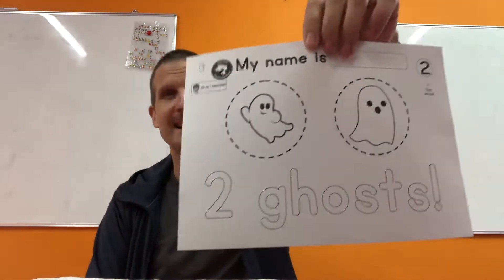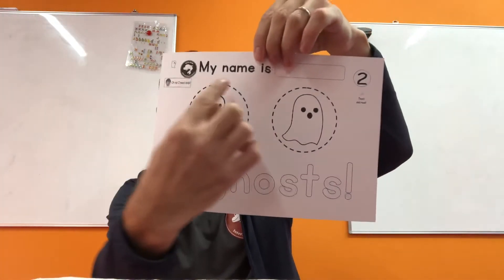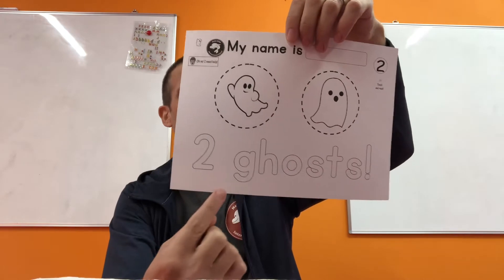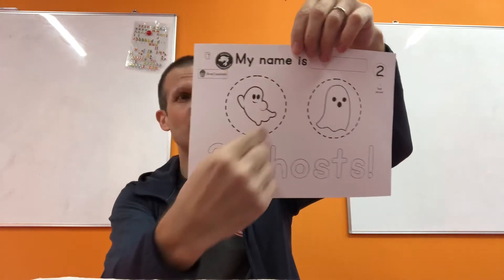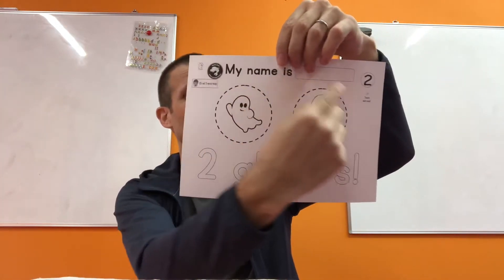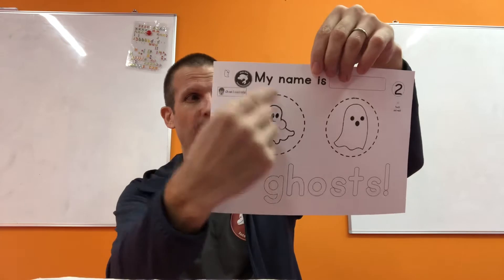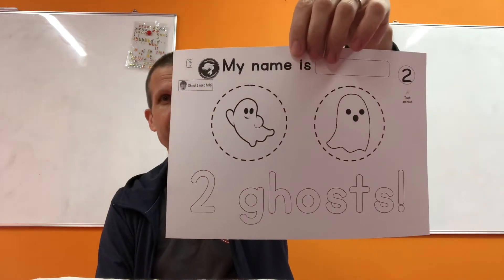Number two, you have to write your name. My name is Greg. And then two ghosts. Try your best to circle — circle, if you can, okay? Circle, circle. Two ghosts.